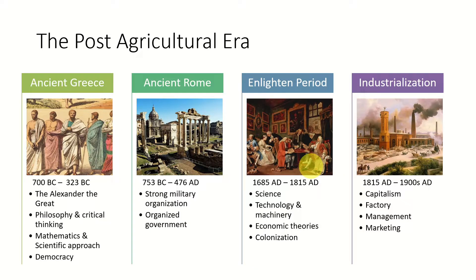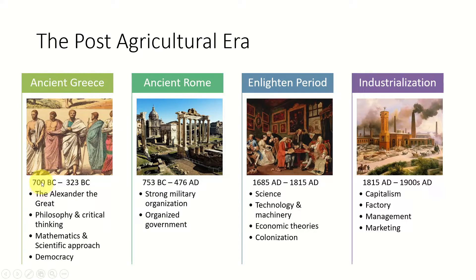Now moving to the modern history of humans, we will look at four main periods: ancient Greece, ancient Rome, the Enlightenment period, and industrialization. Ancient Greece is considered the cradle of western civilization, spanning around 700 BC to 323 BC, initially formulated by Alexander the Great. The Greek civilization is known for its philosophy and critical thinking.